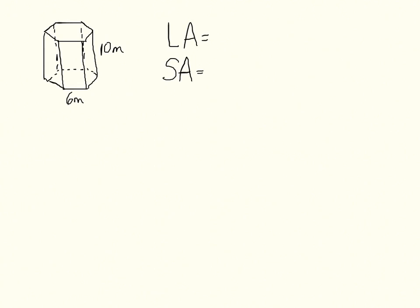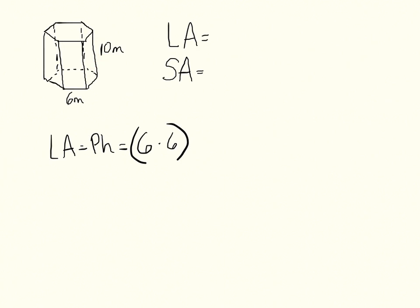Here we have a regular right hexagonal prism and we want to find the lateral area. The lateral area is the perimeter of the base times the height. The perimeter of this base is 6 times 6, since each side has length 6 and there are 6 sides. The height of the hexagonal prism is 10. So the lateral area is 6 × 6 × 10 = 360 meters squared.